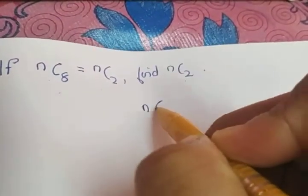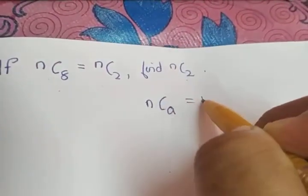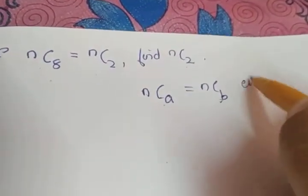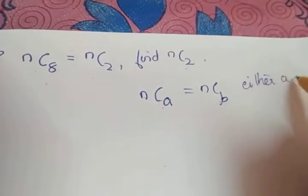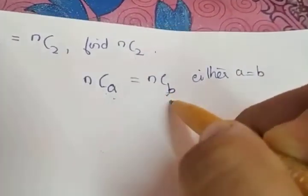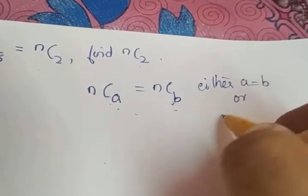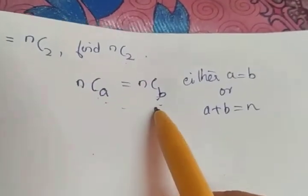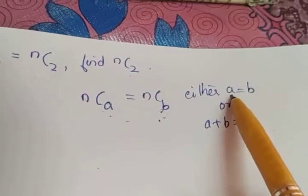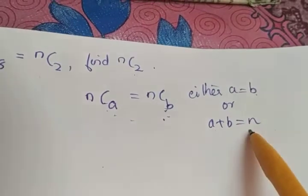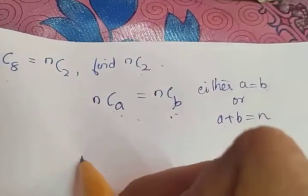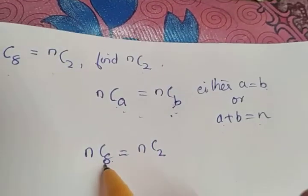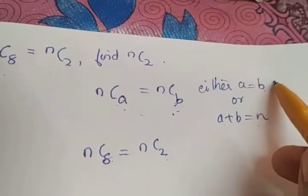We have a property of combinations: if NCa equals NCb, then either a is equal to b, or the sum of a and b must be equal to N. Here NC8 is given equal to NC2, and it is clear that 8 is not equal to 2, so that condition does not hold.